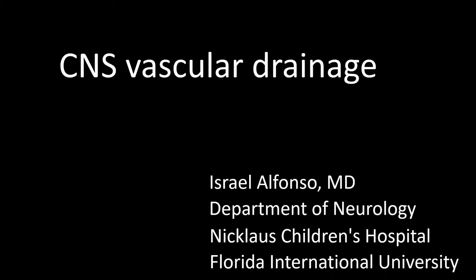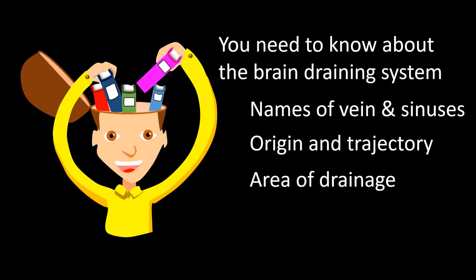This talk is about CNS vascular drainage, including both brain and spine vascular drainage. We will start by talking about brain vascular drainage. Understanding the vascular drainage of the brain is a daunting task, mitigated by the fact that the area of drainage of a particular vascular structure can, in most cases, be figured out by either the name of the vessel or the trajectory of the vessel.